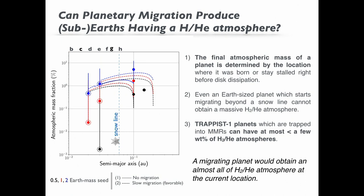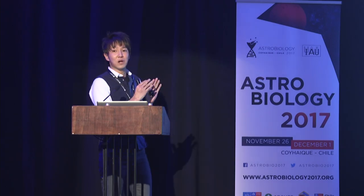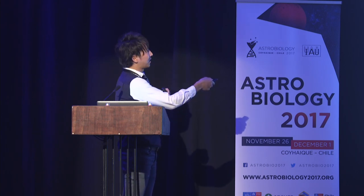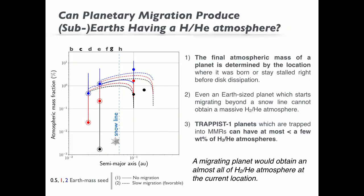Based on our results, what can we say about the atmospheres of the TRAPPIST-1 planets? The current locations of the TRAPPIST-1 planets B, C, D, E, F, G, and H are shown here. As you can see, the TRAPPIST-1 planets can have at most 0.1 weight percent, or at most 1 weight percent, of the total mass as a hydrogen-rich atmosphere. I can say that migration is not sufficient to build a massive atmosphere onto the planet.